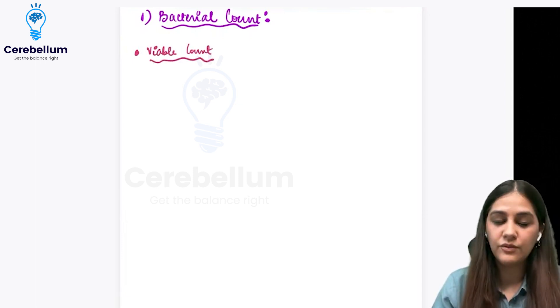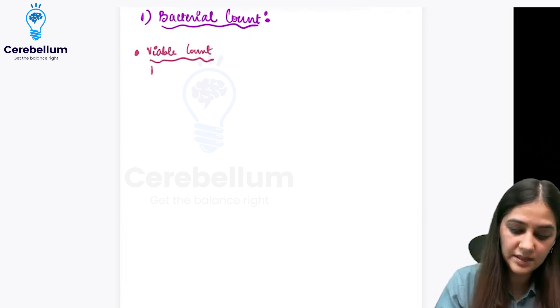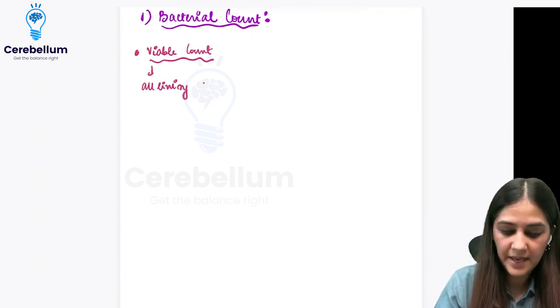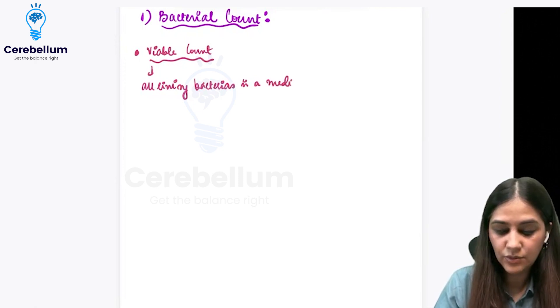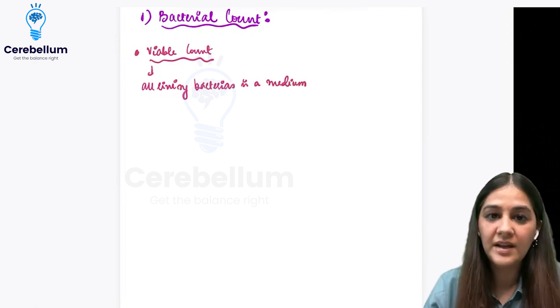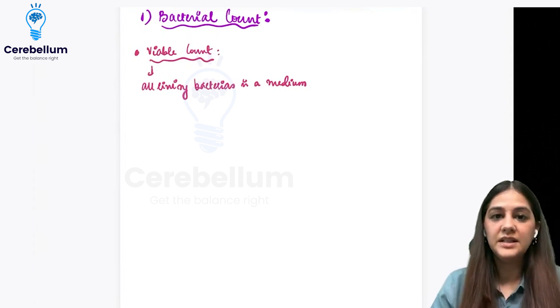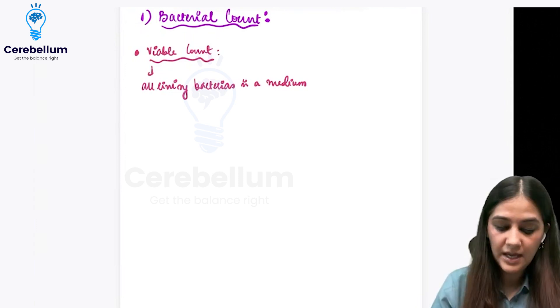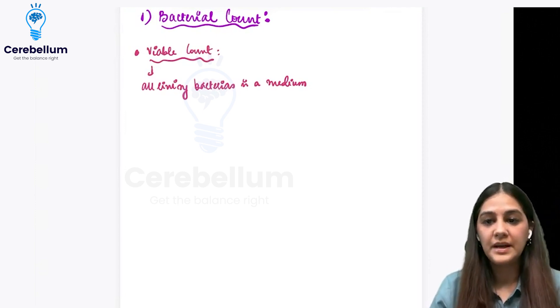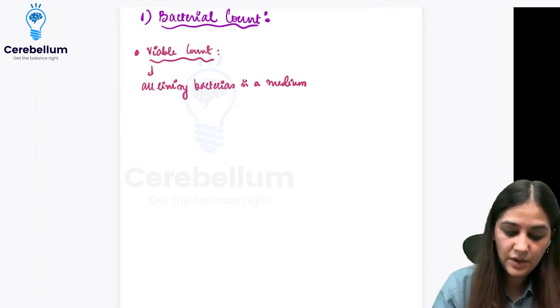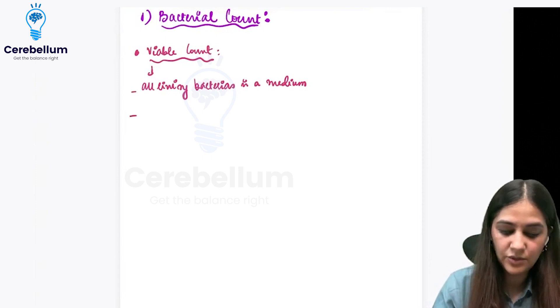What is a viable count? A viable count is nothing but all living bacteria in a medium. 'Viable' means living. This viable count is actually dependent on two major things.